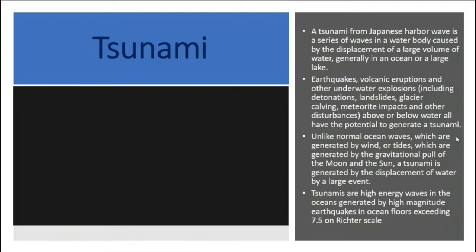Unlike normal ocean waves generated by winds, or tides generated by the gravitational pull of the Moon and Sun, a tsunami is the displacement of water by a large event. Tsunamis are not generated by low-magnitude earthquakes; they require high-magnitude earthquakes of more than 7.5 on the Richter scale.